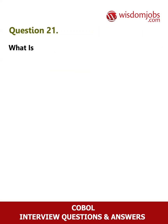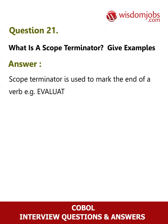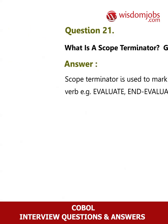Question 21: What is a scope terminator? Give examples. Answer: A scope terminator is used to mark the end of a verb. For example: EVALUATE / END-EVALUATE, IF / END-IF.